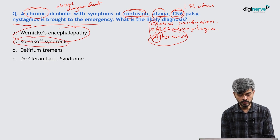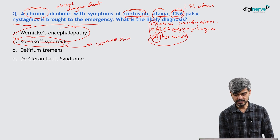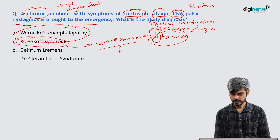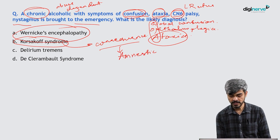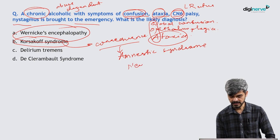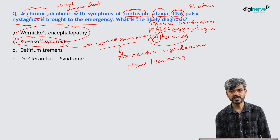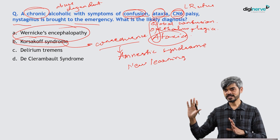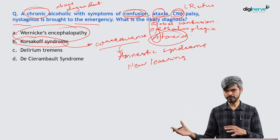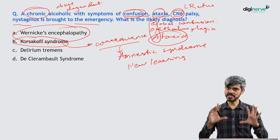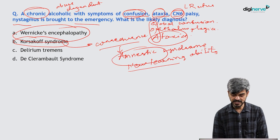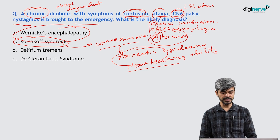Some may ask: is it Korsakoff syndrome? Korsakoff syndrome is a consequence of Wernicke's encephalopathy — a long-term complication. If an individual develops Wernicke's encephalopathy and is untreated, they may develop a chronic amnestic syndrome with difficulty in new learning ability. Like in the movie Ghajini, these individuals cannot make new memories. New learning ability is impacted in Korsakoff syndrome. If you do not treat Wernicke's encephalopathy, they may develop Korsakoff syndrome.